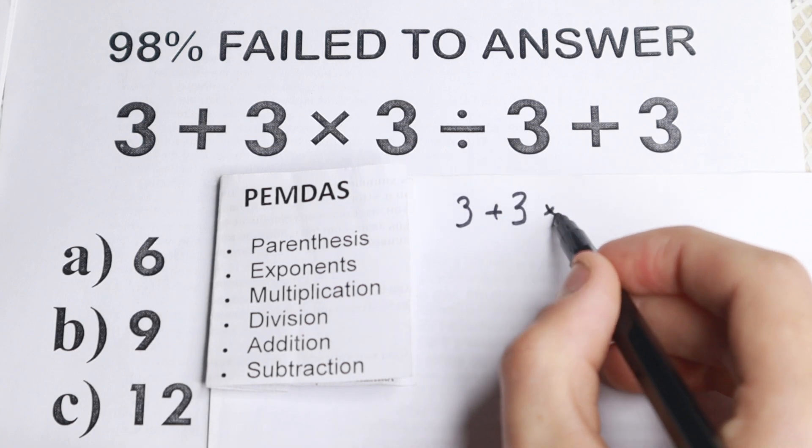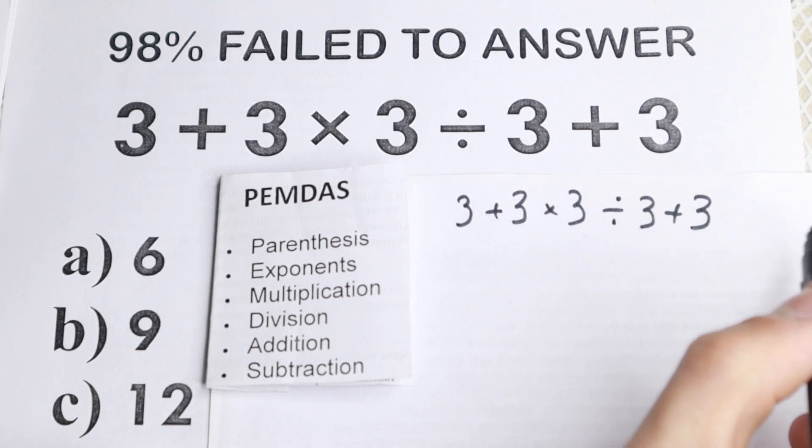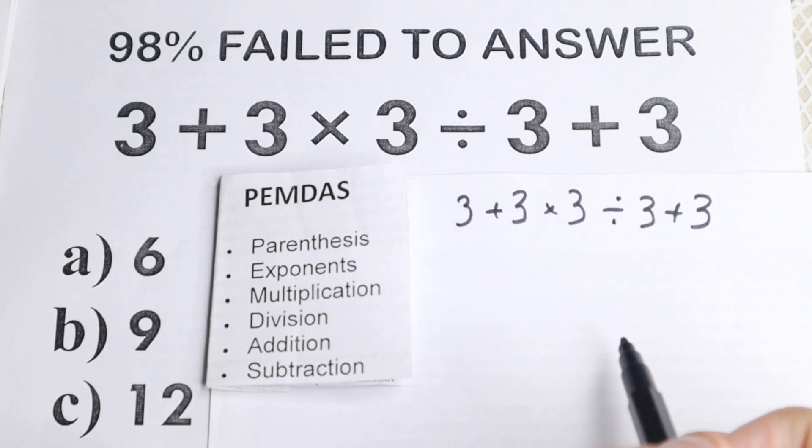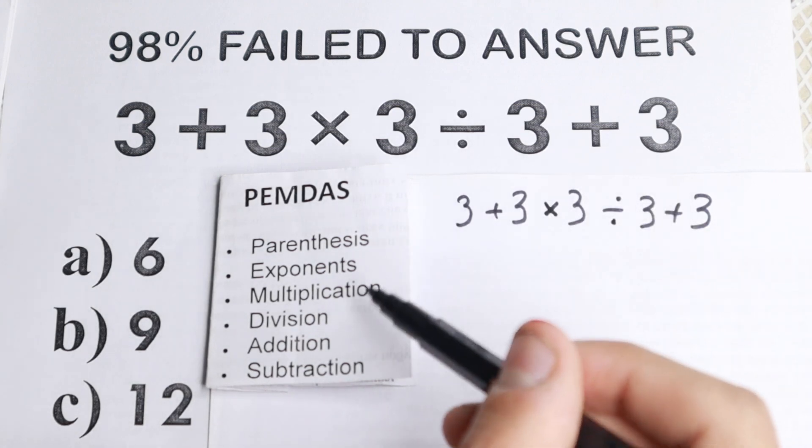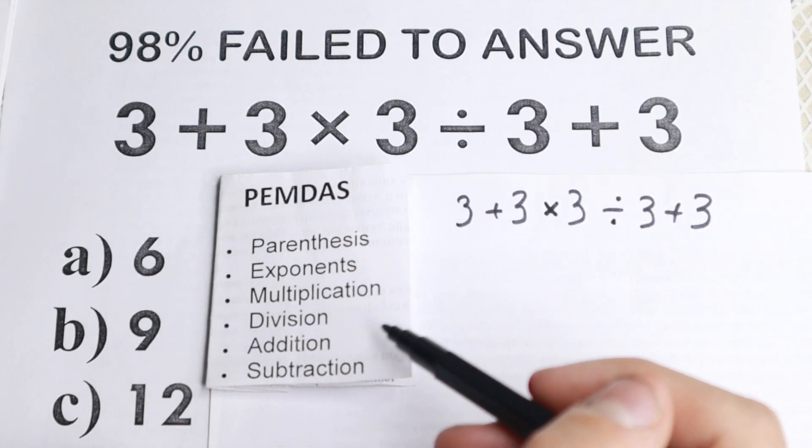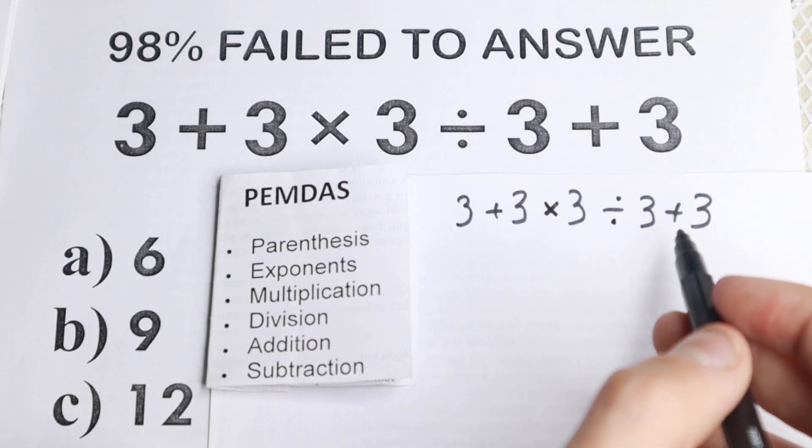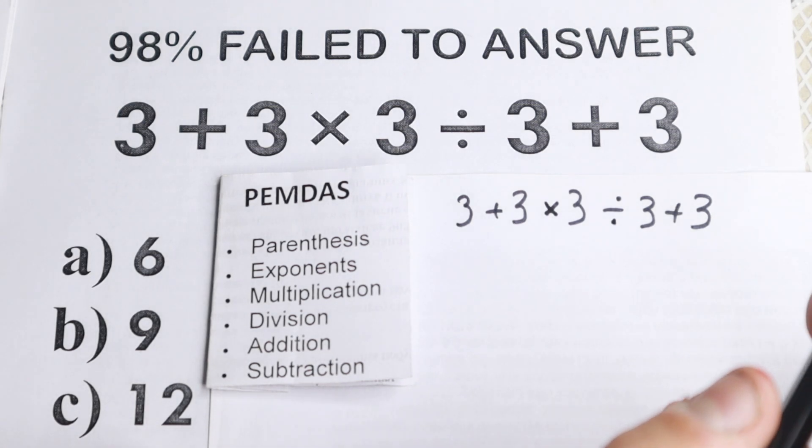So 3 + 3 × 3 ÷ 3 + 3. So I re-read this problem once more right here. So this is multiplication, this is division. Multiplication and division part, because we skipped these two parts. Here we have multiplication and division part.